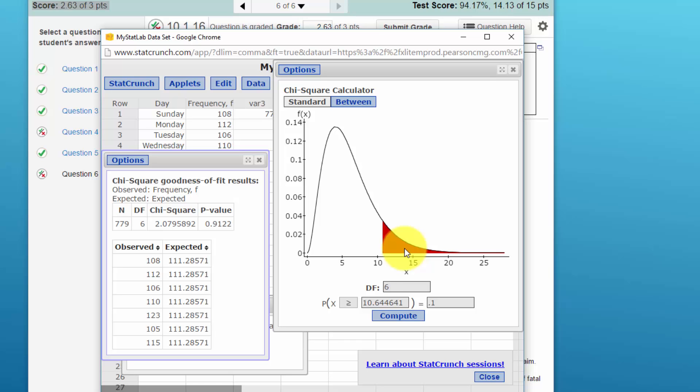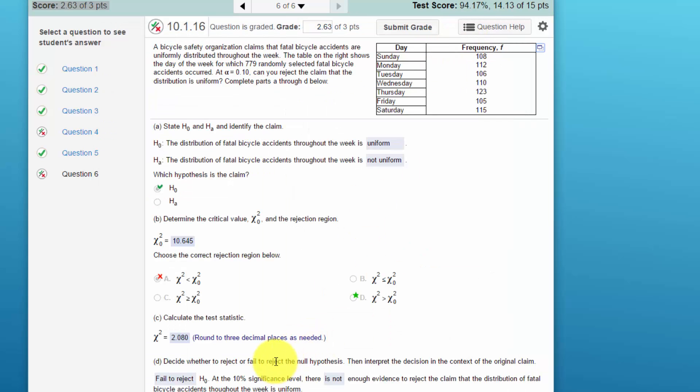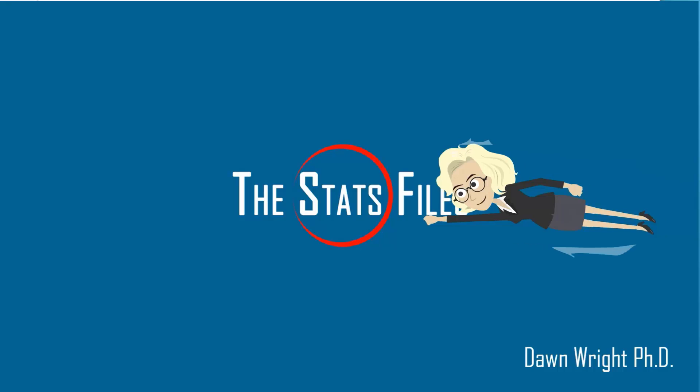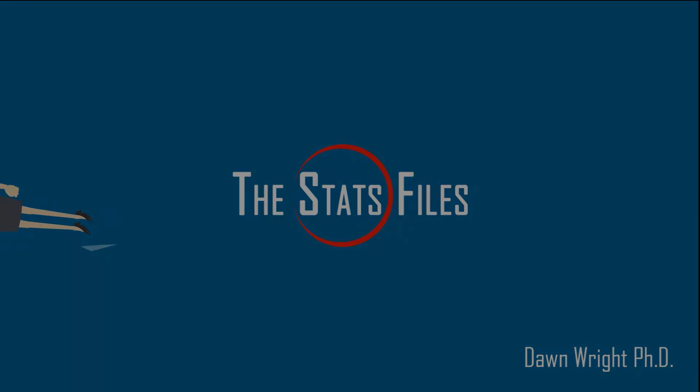So we failed to reject the null, and at the 10% significance we can conclude there is not enough evidence to reject the claim. Remember, the null was the claim, so there's not enough evidence to reject the claim that the distribution of fatal bicycle accidents throughout the week is uniform. So I hope this helps.